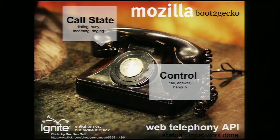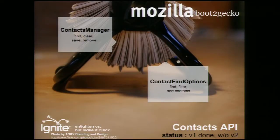Looking at some of these: web telephony allows you to make phone applications. They can make calls, answer calls, but also interrogate the call state — so is the person on a phone call at the moment, do we need to hold the call? We have a contacts API that allows you to add, find, and remove contacts from your phone or tablet.